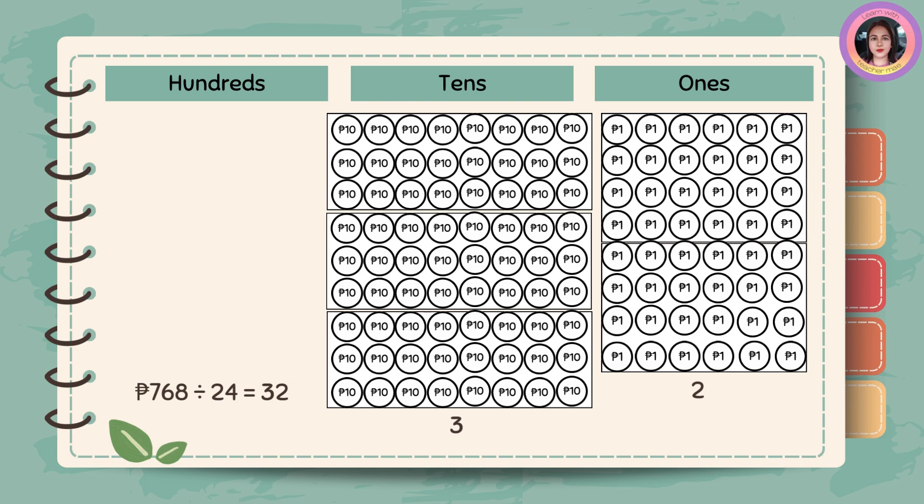Therefore, 768 pesos divided by 24 is equal to 32.